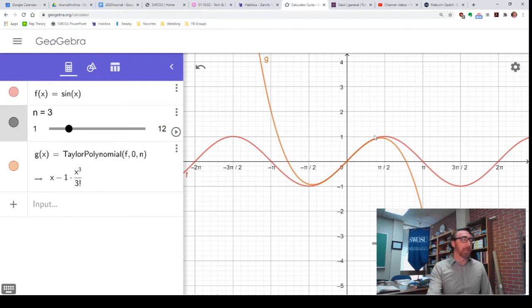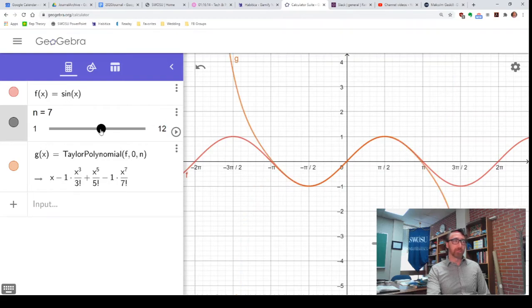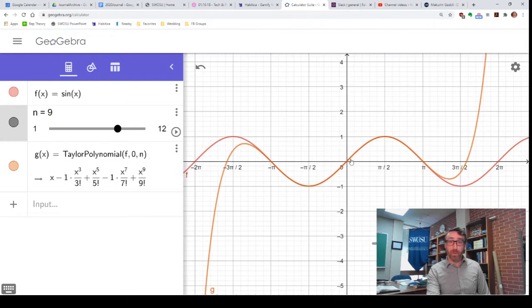And of course, with GeoGebra, we could do this for as high a degree as we wanted. 5th degree, it's even better. 7th degree. 9th. Notice how far out it's matching.